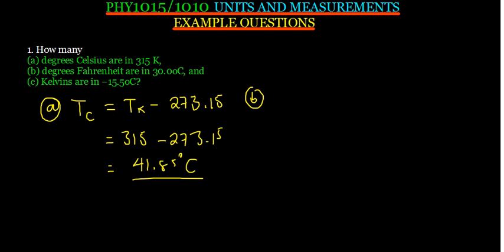Now, how do you convert? We've been given temperature in degrees Celsius and we want to convert to degrees Fahrenheit. The temperature in Fahrenheit is given by 9 over 5 multiplied by the temperature in degrees Celsius, and then plus 32.